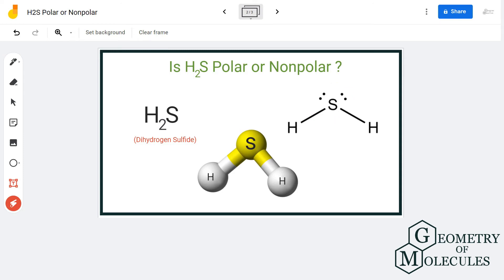This creates a slightly negative charge on the sulfur atom and slightly positive charges on the hydrogen atoms. Hence, there are poles in this molecule, and any molecule that has poles is polar.